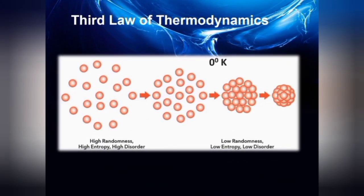Finally, we arrive at the third law — a law that deals with absolute zero and entropy. The third law states that as the temperature of a system approaches absolute zero, the entropy of the system approaches a minimum value. Absolute zero is the lowest possible temperature, and entropy is minimized at this point.